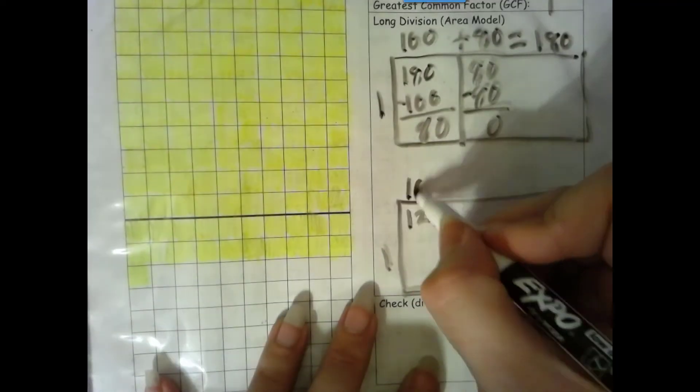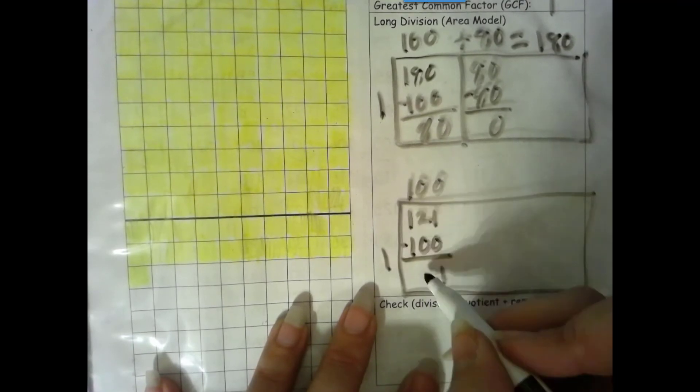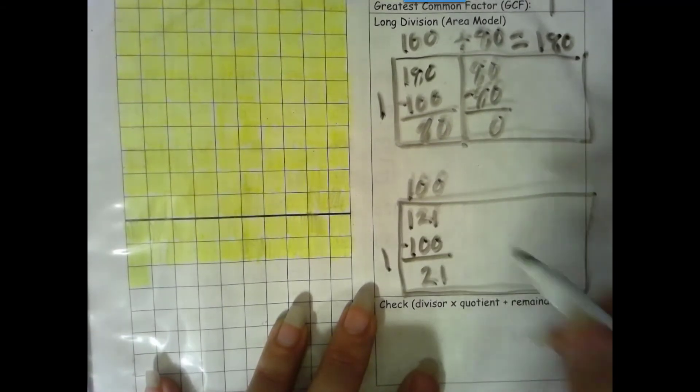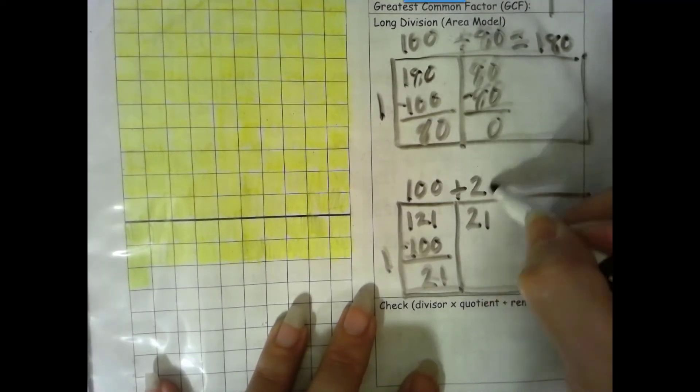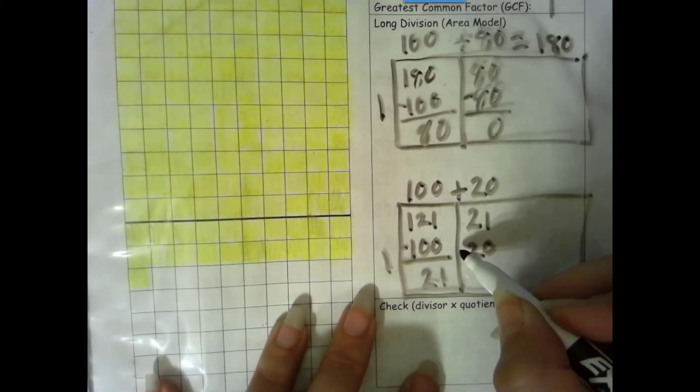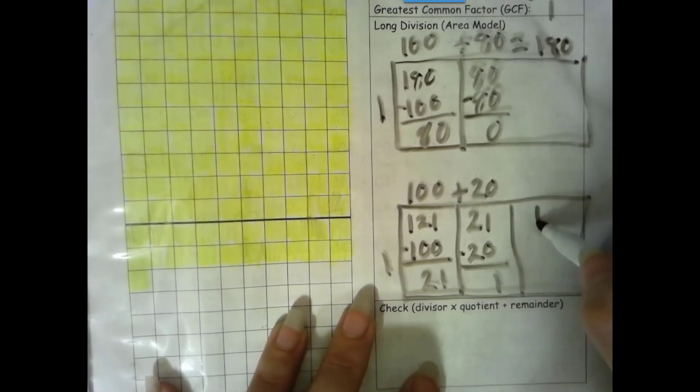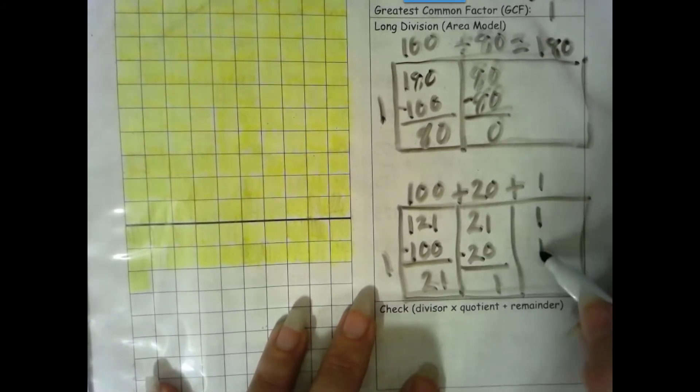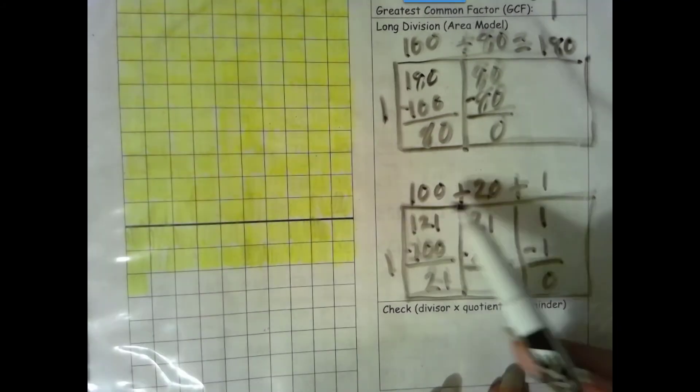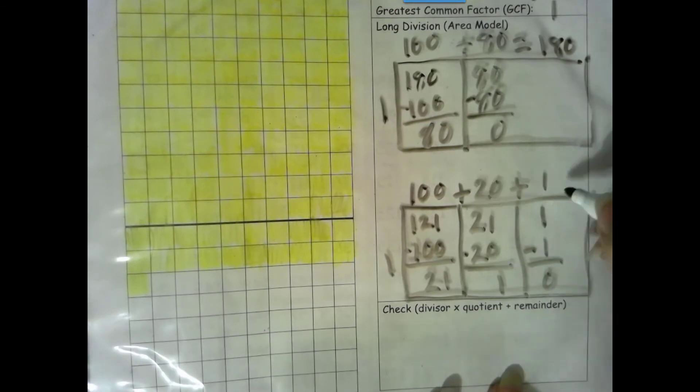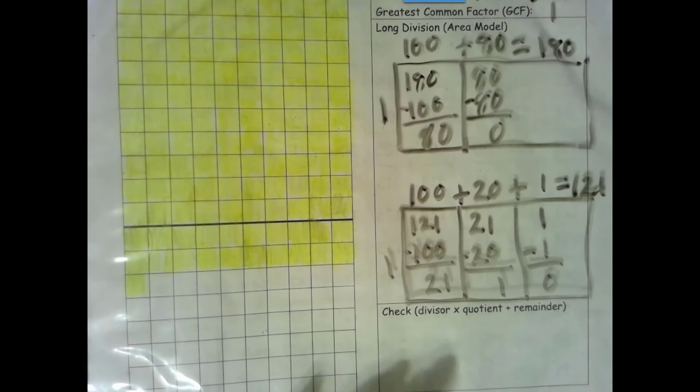Right here. 100 times 1 is 100. We're on top, no need to stop. Bring the 21 up here. 20 times 1 is 20. We're on top, no need to stop. The number is the same. Zero is the game. And then 1 times 1 is 1. The number is the same. Zero is the game. Here we ended up with an expanded form. 100 plus 20 plus 1 is 121, which is a palindrome.